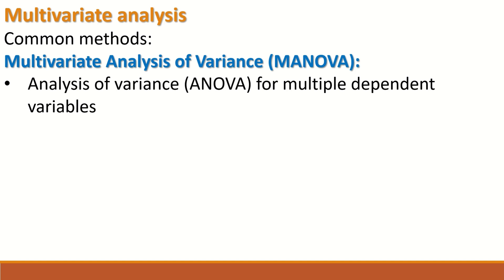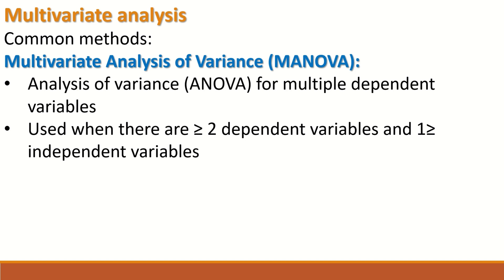The dependent variable is sometimes called the response variable or the outcome. For MANOVA, there must be more than one outcome — more than one dependent variable. MANOVA is used when there are two or more dependent variables (the outcome or response variable) and one or more independent variables, also called explanatory variables, factors, or predictors.